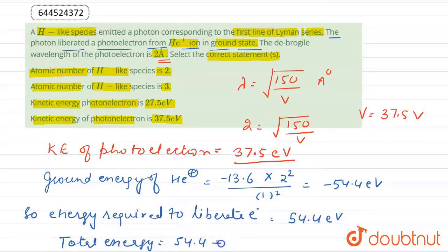So total energy is 54.4 plus 37.5 electron volt, that is nearly 92 electron volt.